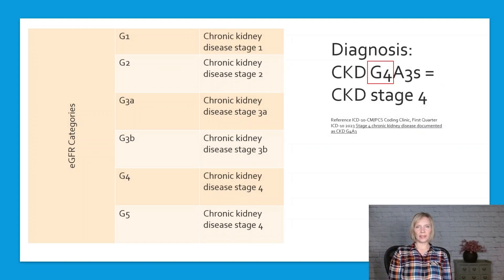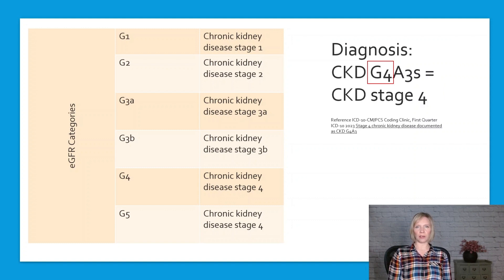Chronic kidney disease stages can also be documented and coded using CGA staging. This advice comes directly from coding clinic. CGA staging provides a more detailed description of a patient's chronic kidney disease, with the stage indicated by the number following the G. For instance, if the physician documents CKD G4A3, you would code it as chronic kidney disease Stage 4 based on the number 4 following the G.